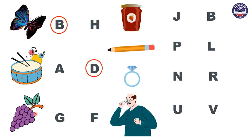Let's move on to the next picture. What is this, everyone? These are grapes. Yes. G, G, grapes. Does grapes start with letter G or F? G, G, grapes starts with letter G. Correct. So we are going to circle letter G.